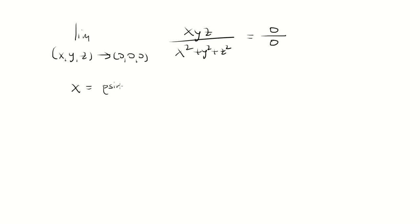So x is rho sine phi cosine theta, y is rho sine phi sine theta, z is rho cosine phi. And instead of x, y, and z approaching 0, we're going to have rho approach 0 from the right. Rho is the radius, so it can never be negative. That's why we're approaching 0 from the positive direction.